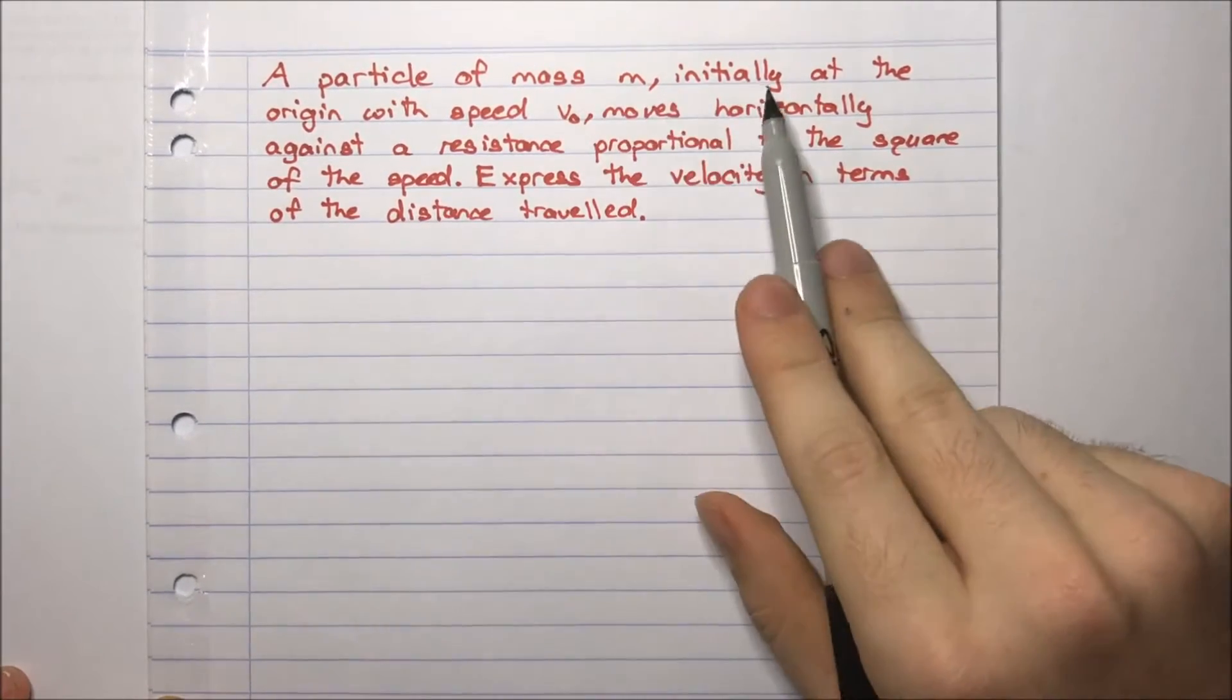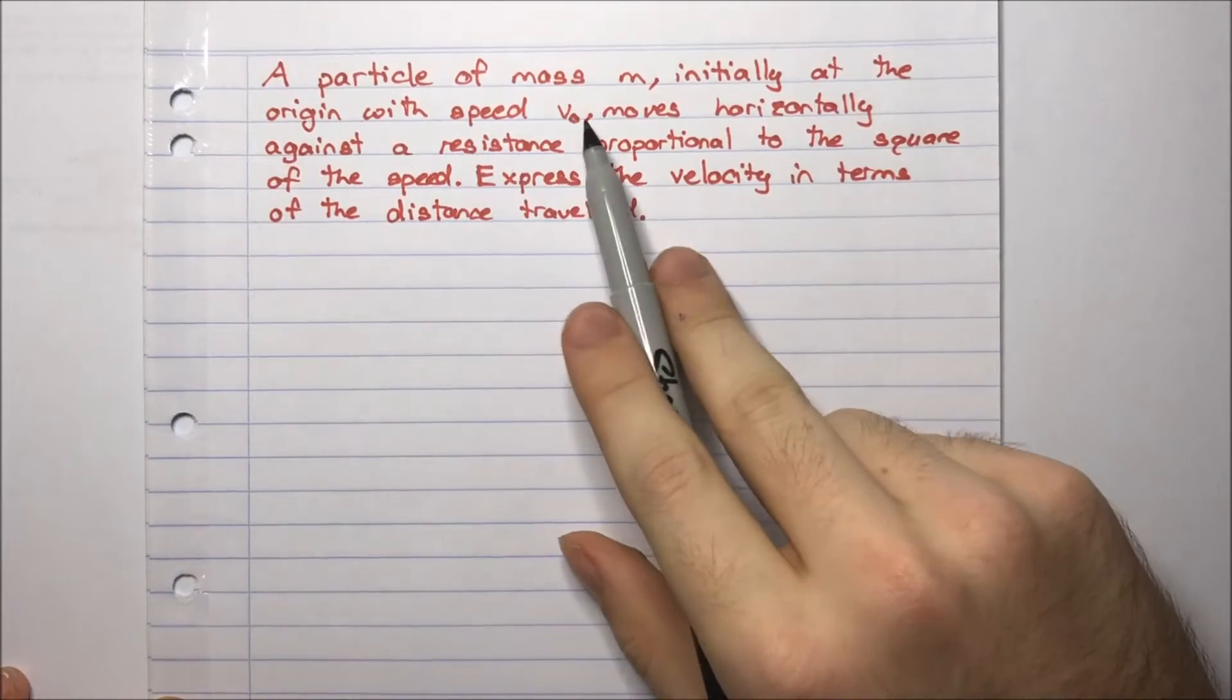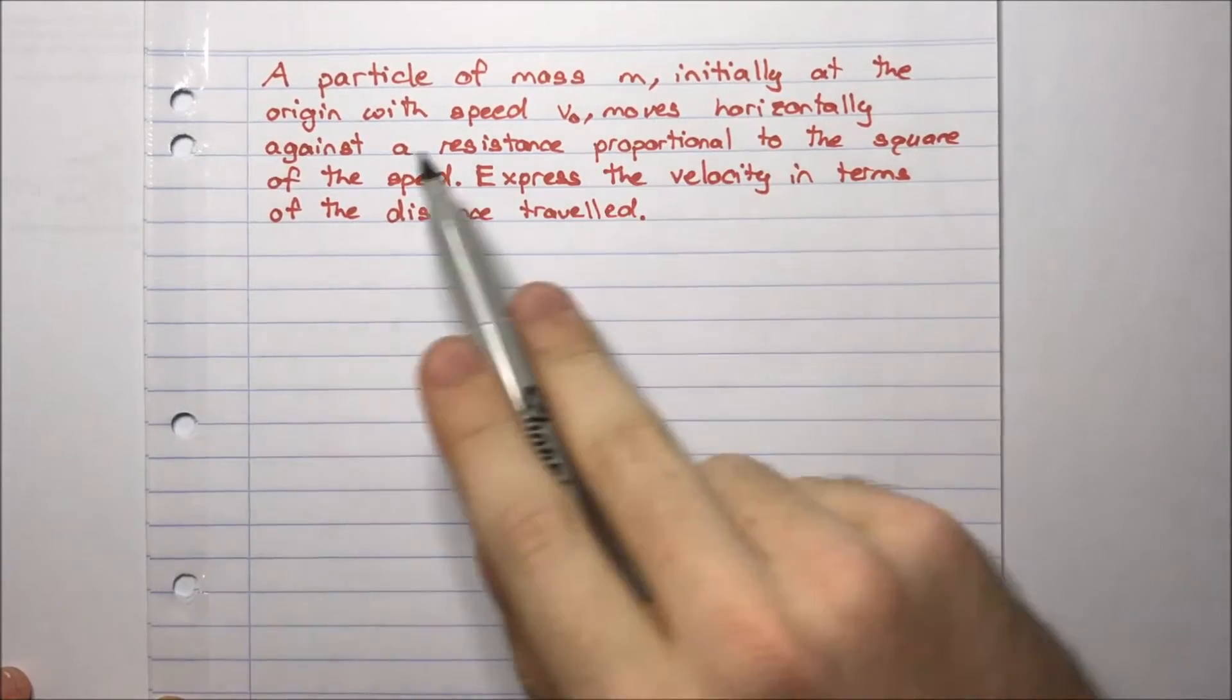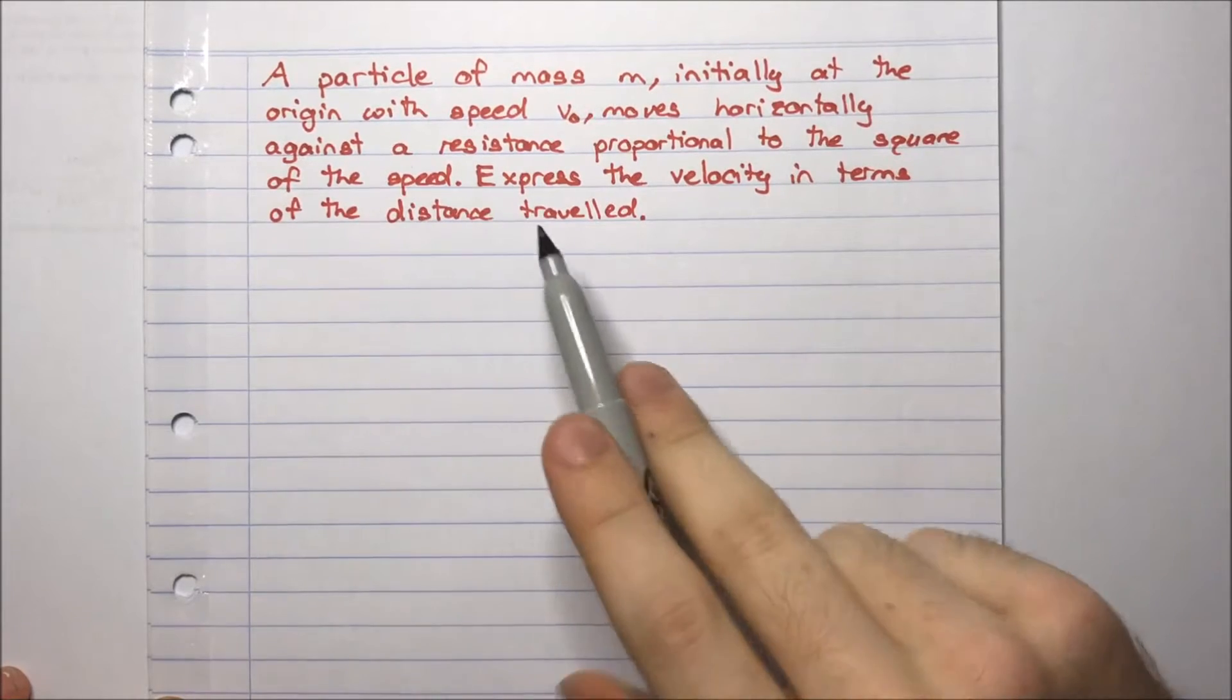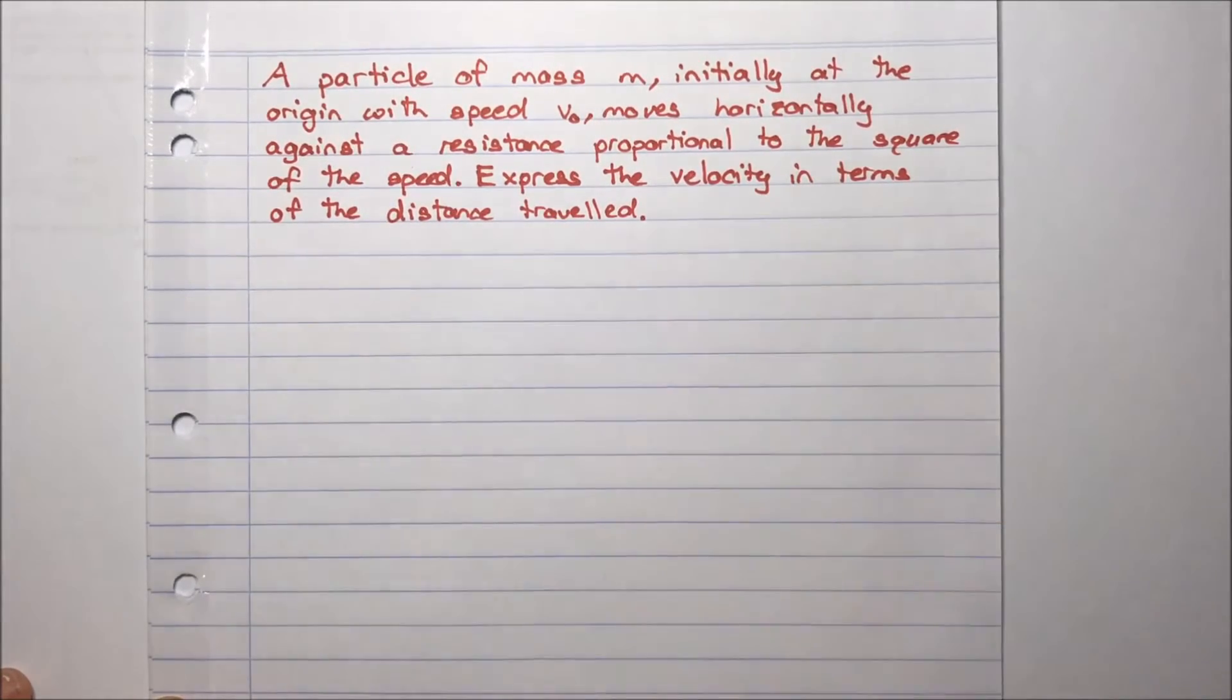A particle of mass m, initially at the origin, with speed v0, moves horizontally against a resistance proportional to the square of the speed. Express the velocity in terms of the distance travelled.